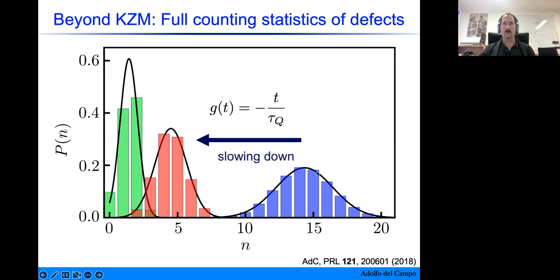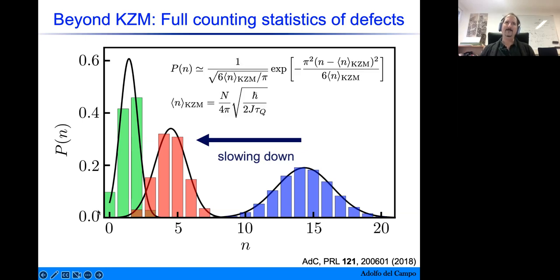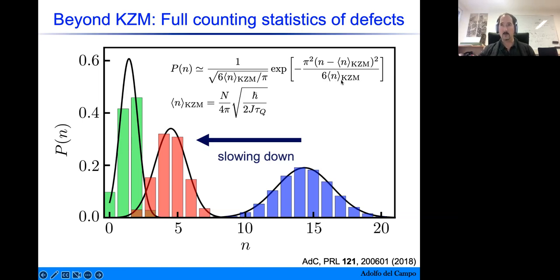Looking at numerically exact simulations for three different quench times: when driving the phase transition from the paramagnet to the ferromagnet, if we go very fast the kink number is high and the distribution is broad; going more slowly, the mean shifts to lower values and the distribution becomes narrower; going very slowly, there is a finite probability of getting no defects at all. Theoretically, we derive a Gaussian approximation to these histograms which works well far from the onset of adiabatic dynamics. For fast quenches, the histogram is well matched by this Gaussian centered at the Kibble-Zurek prediction, and the variance is proportional to the mean — not equal to it, so it is not a Poisson distribution.